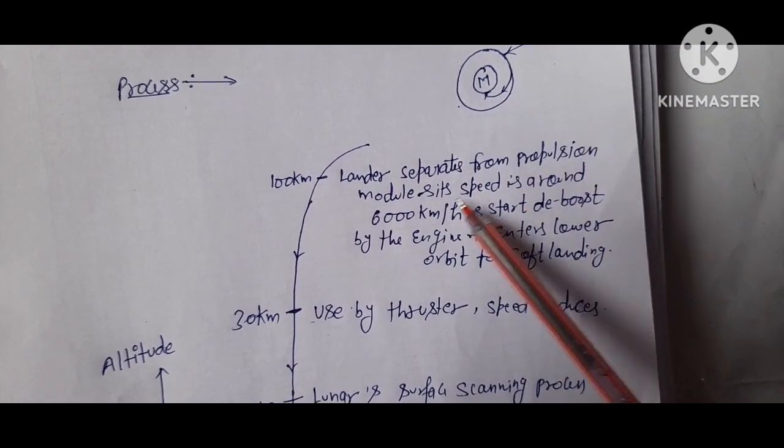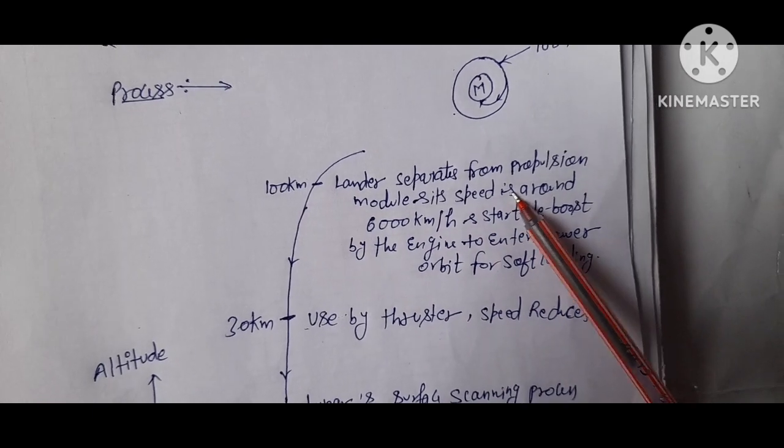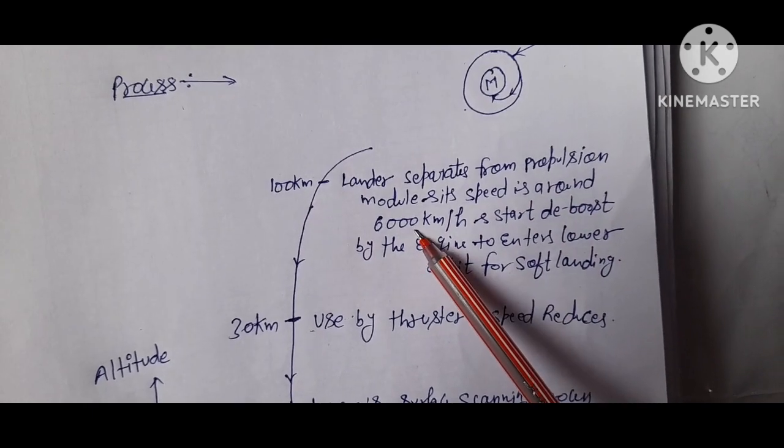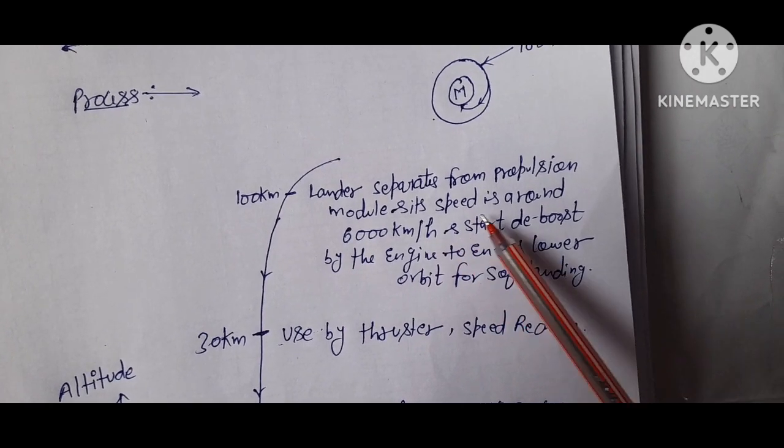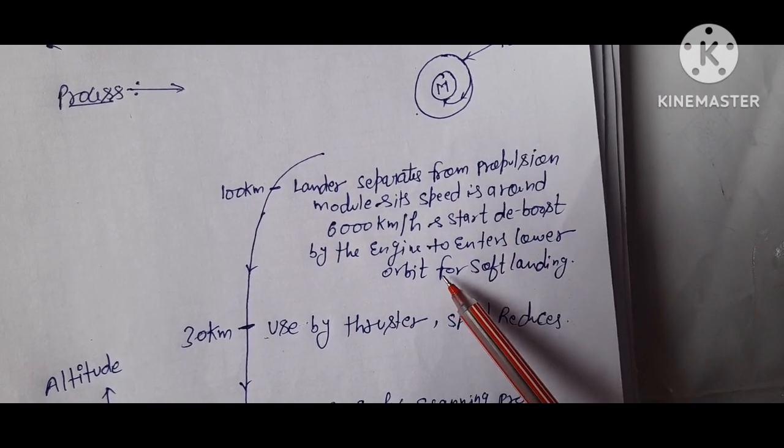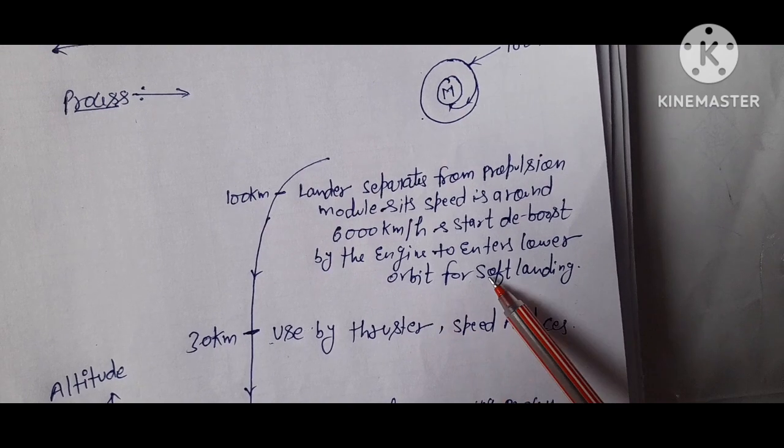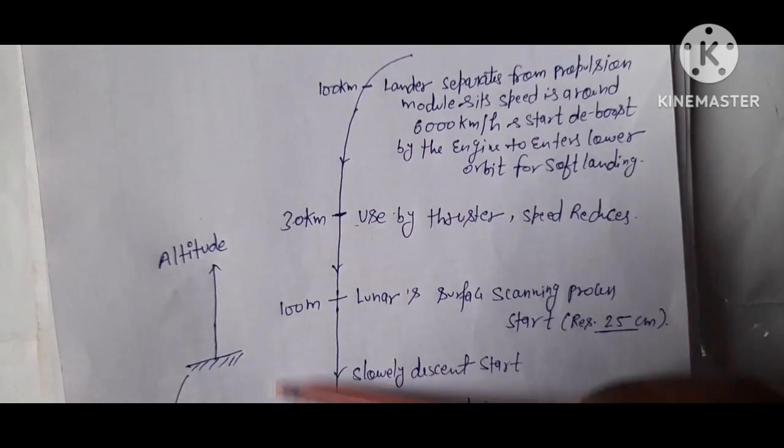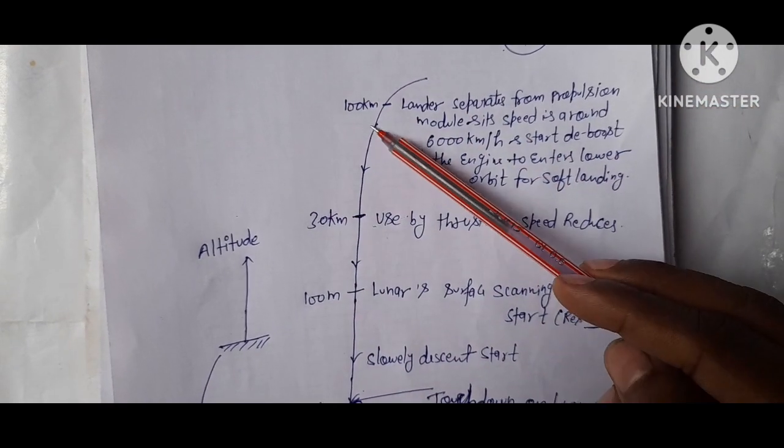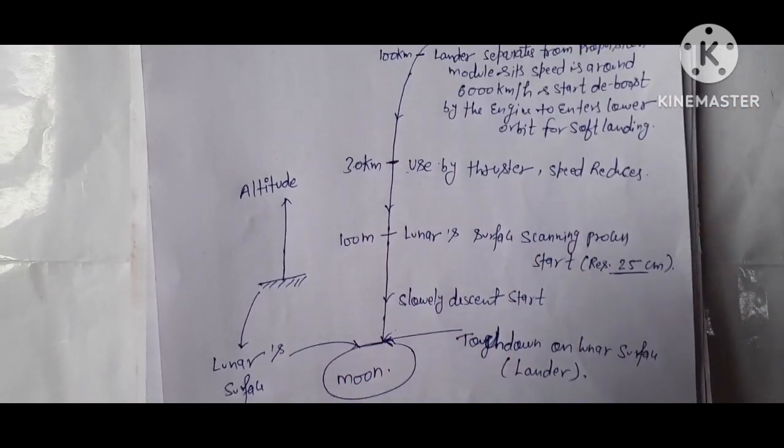The lander separates from the propulsion module at a speed of around 6000 km per hour. The engine starts deboosting to enter a slower orbit for soft landing. This direction shows altitude, as you see here in this figure.